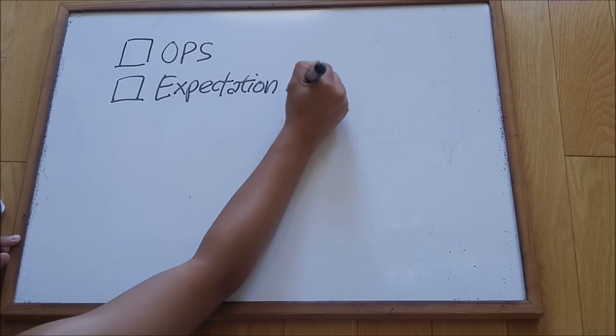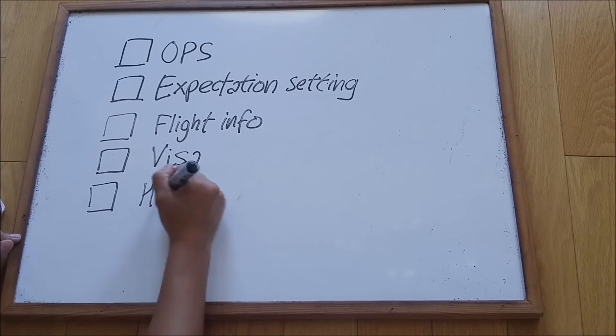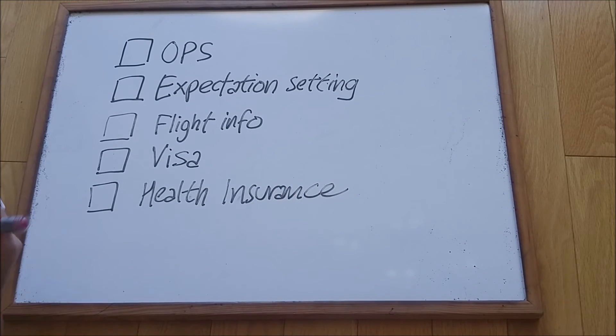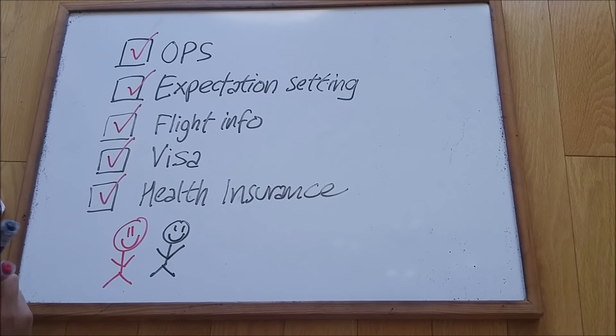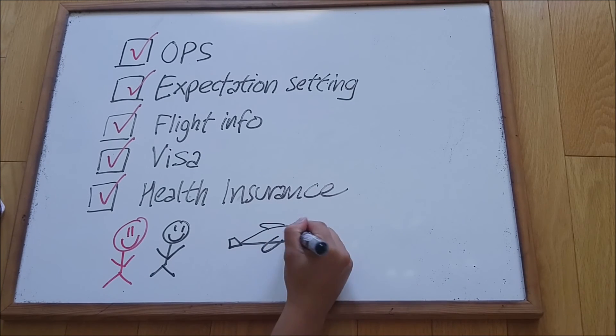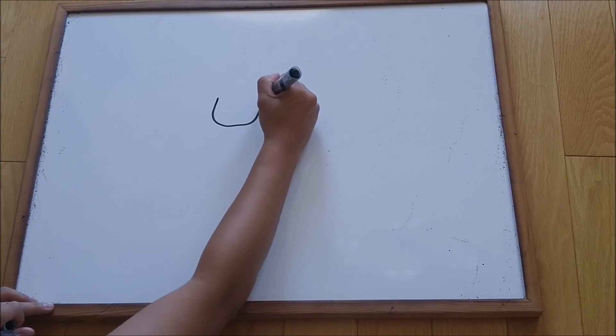After that, you can go on with your usual checklist with OPS, your expectation setting, your flight info, visa, health insurance. Once that's done, you have a happy EP with a happy VP, and your EP will be ready for an AIESEC experience.